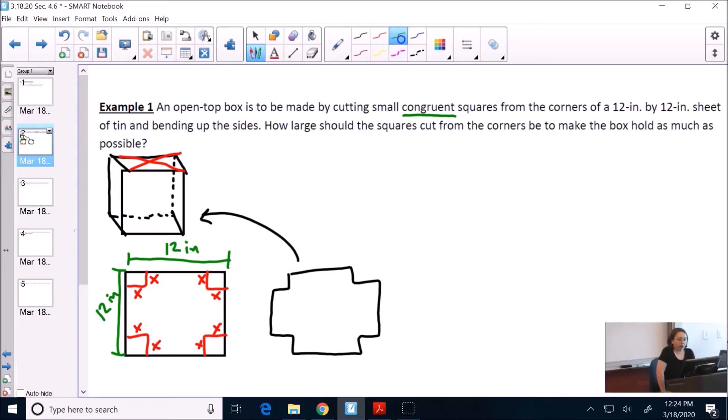So how large should the squares cut from the corners be to make the box hold as much as possible? What are we trying to maximize here? It says we want it to hold as much as possible. Talk about how much it can hold. What geometric value are we trying to maximize? The volume. So the volume is what we are trying to maximize. How much it can hold. The volume of a box is the length and the width and the height. So what we need to do, we need to try and determine an equation for the volume in terms of x, the variable we've already created.